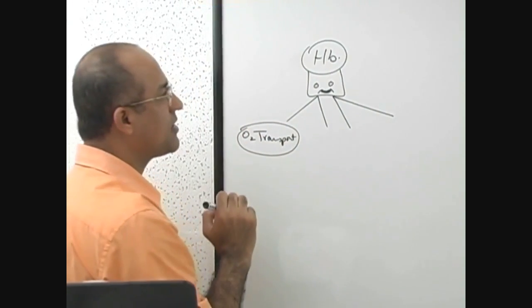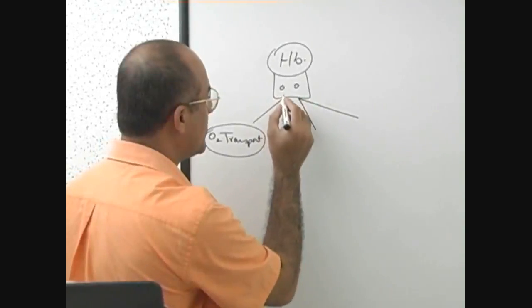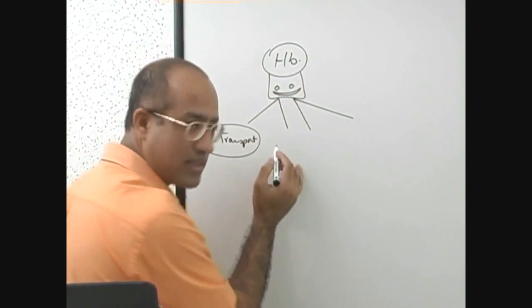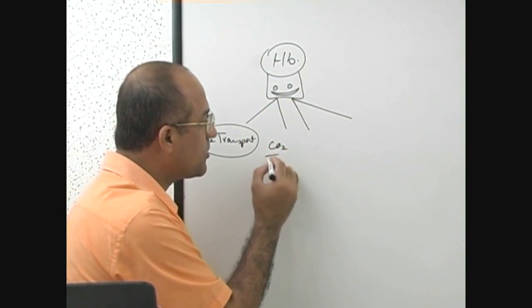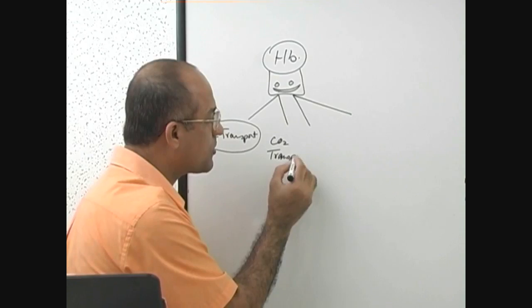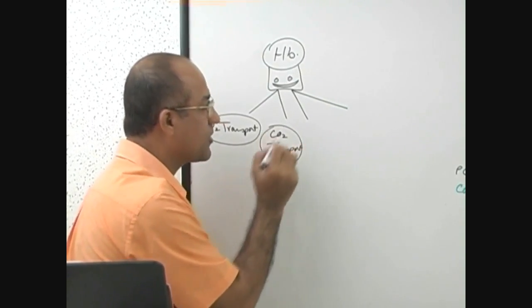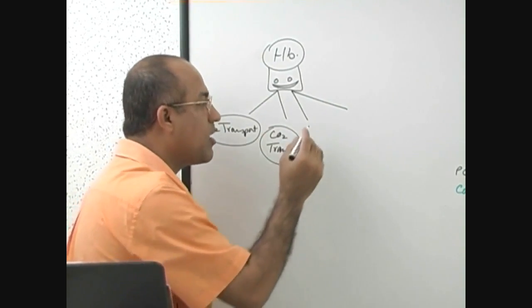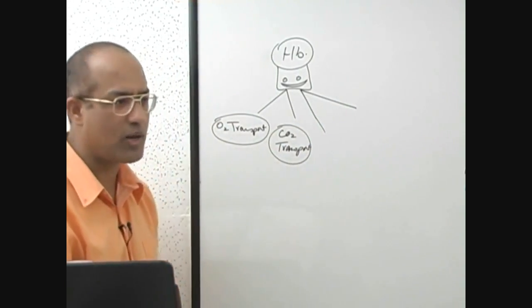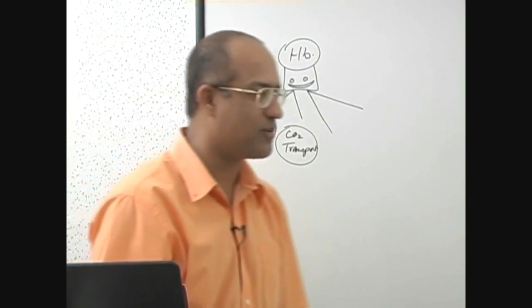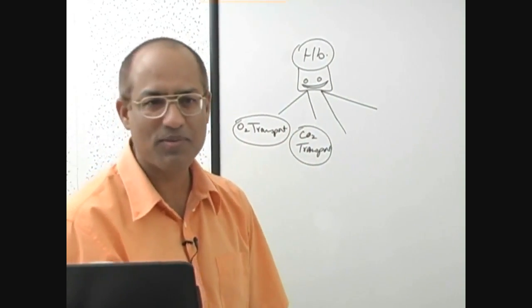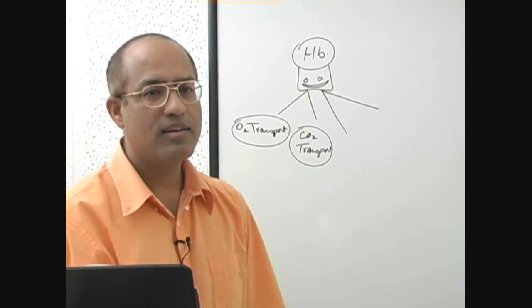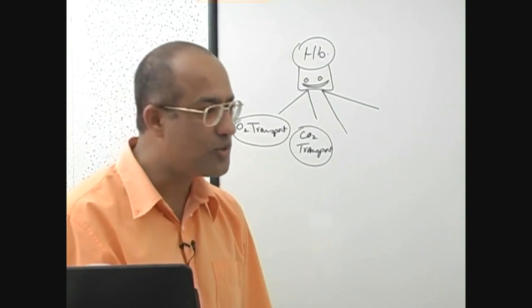Yes, one is oxygen transport. Every student knows that, okay. He is too much laughing, no one answering. Then second is carbon dioxide transport, it helps in that. Of course we will talk now, what's the role of hemoglobin. What else is hemoglobin doing? Don't tell me it makes color of the blood red. Of course it does, but that is not a real function of it. What is the special function of it?